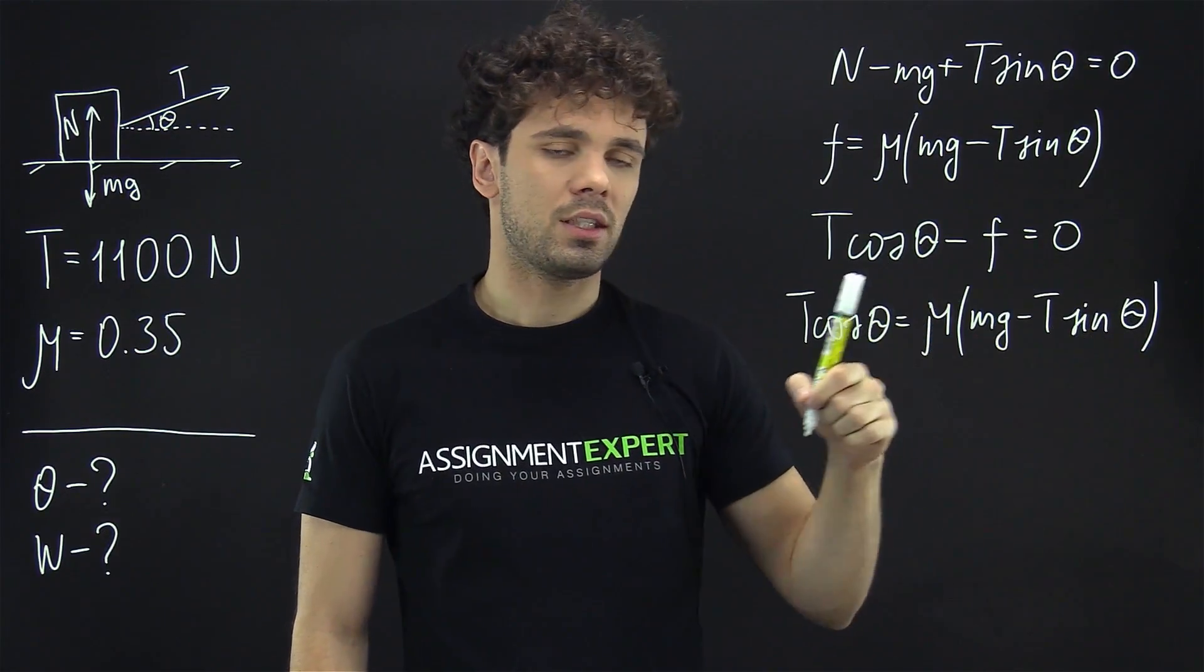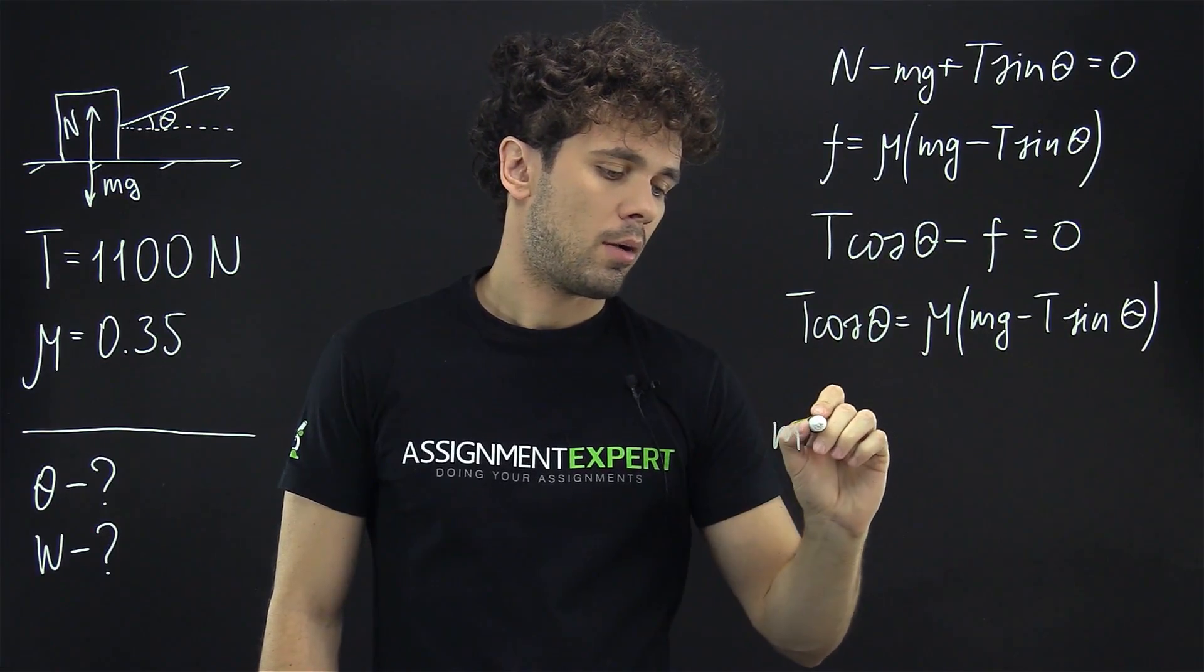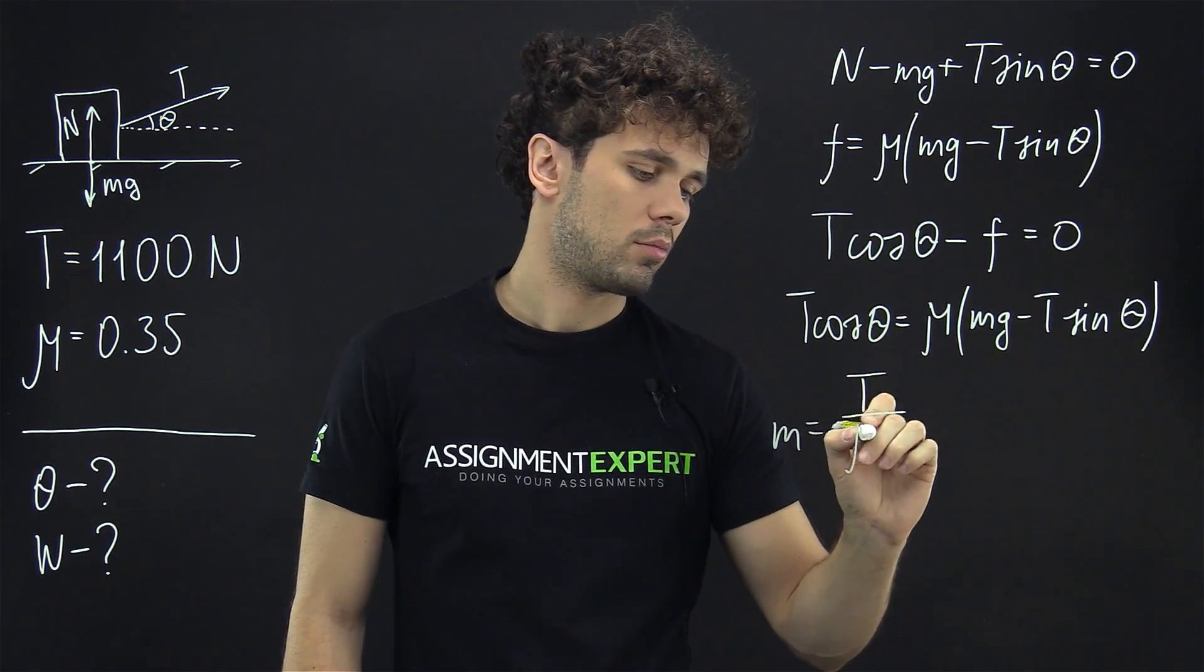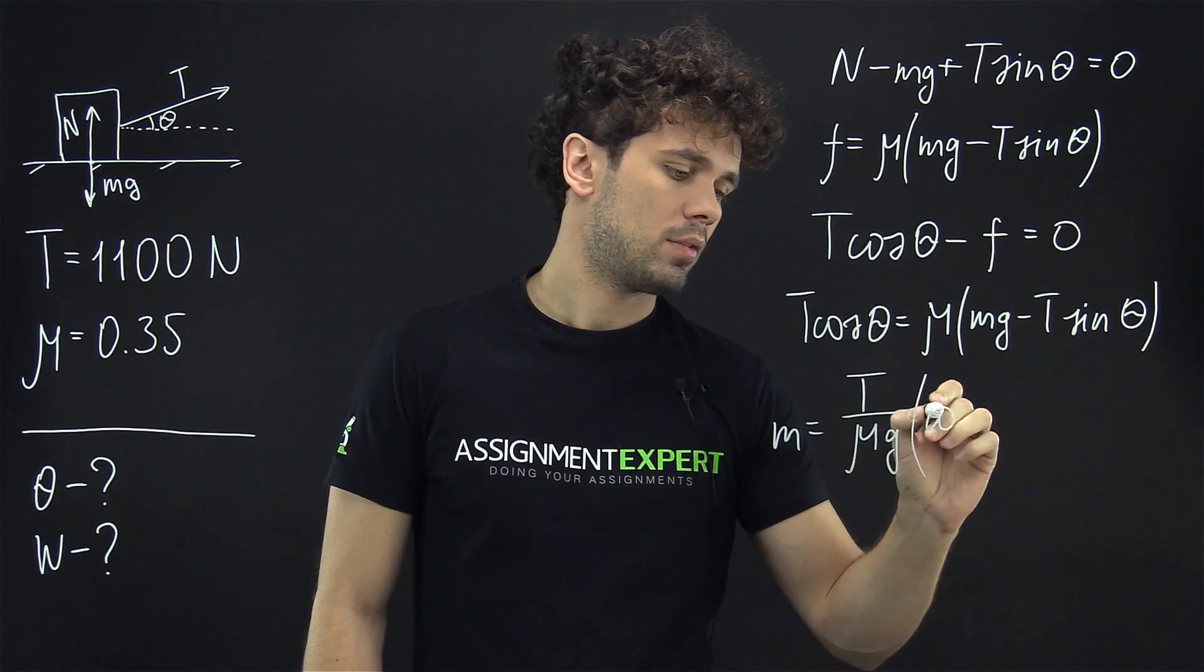Now from this expression let us derive M. M equals T divided by mu times g times cosine of theta plus mu times sine of theta.